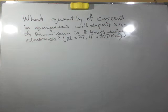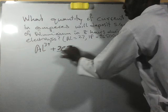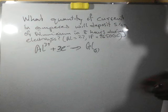Based on the question, we know that aluminum will gain three electrons to be deposited as aluminum metal. It simply means that aluminum is trivalent.